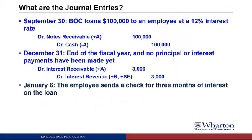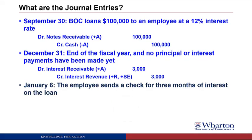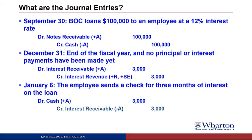Now it's January 6th, and the employee sends a check for three months of interest on the loan. This is a cash transaction happening in the next fiscal year. We're receiving cash, so we debit cash for $3,000. Since we're receiving the interest that was owed, it's no longer receivable, so we credit interest receivable for $3,000 to reduce that asset to zero.